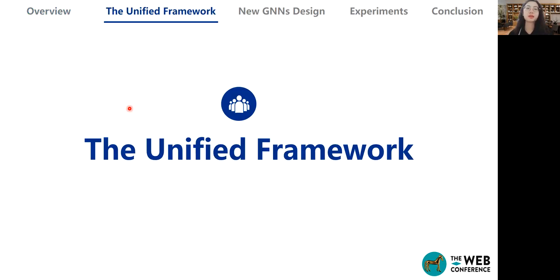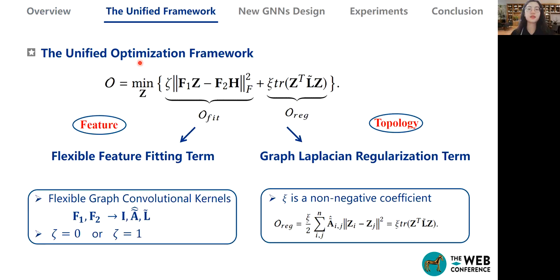In our work, we focus on these questions and summarize the propagation mechanism of different graph neural networks. This framework consists of two terms, and the learned representation can be viewed as the optimal solution by minimizing the objective. The first term is a feature-fitting term, which flexibly encodes the information in feature H to the learned representation Z through designing different graph convolutional kernels F.